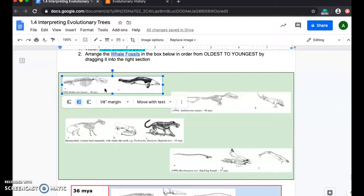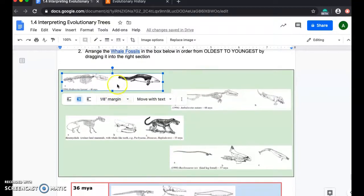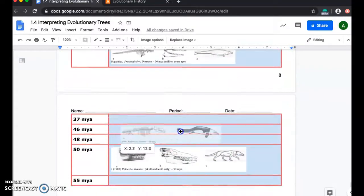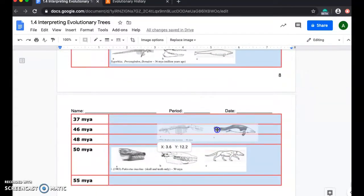I can see that this fossil corresponds to the Rhodocentis from 46 million years ago. So then I'm going to drag this fossil to the 46 million years ago box and drop it in there.